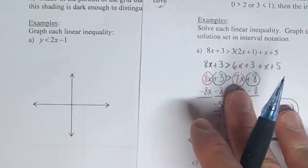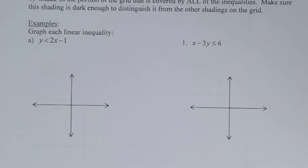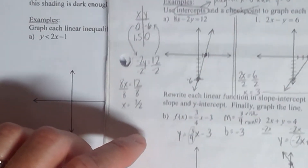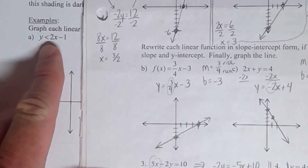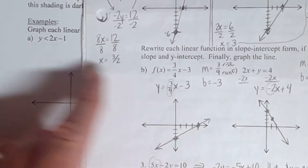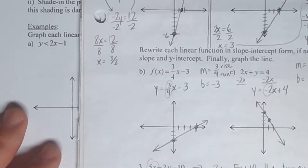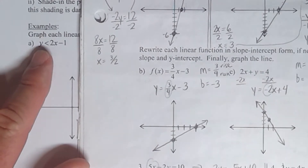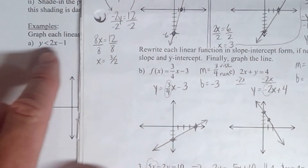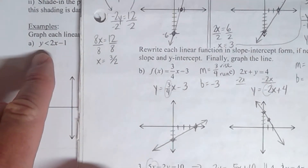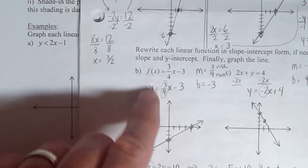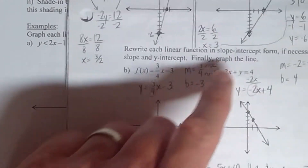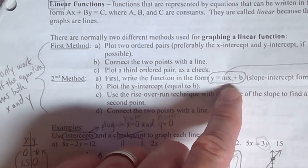Another thing we need to talk about is that it's also similar to section 2.4, where the lines we did there were in the mx plus b form, and this one is as well — with the exception of the fact that this is not an equal sign. It's an inequality. But we are going to temporarily change this to an equal sign and then graph the corresponding line. When it looks like this, it's in the y equals mx plus b form — the slope-intercept form, just like we talked about in 2.4.